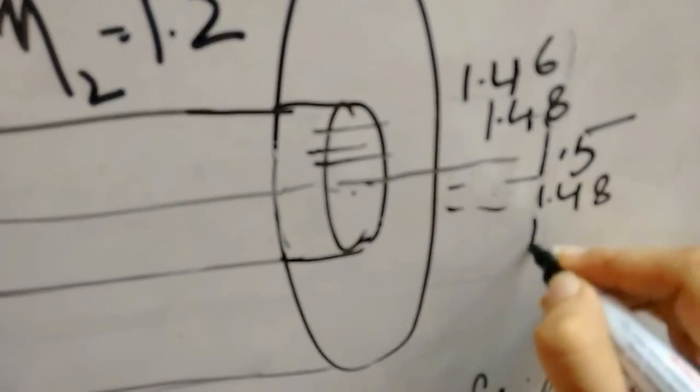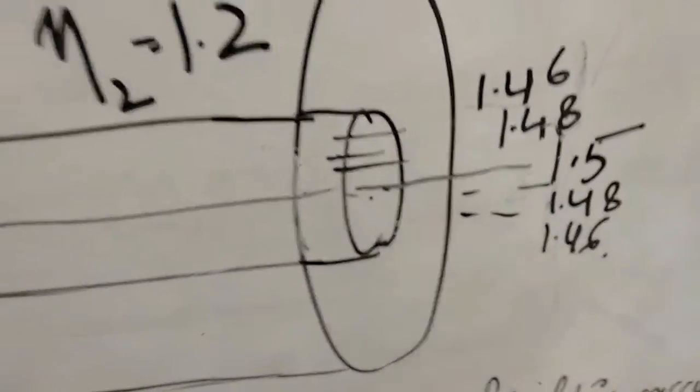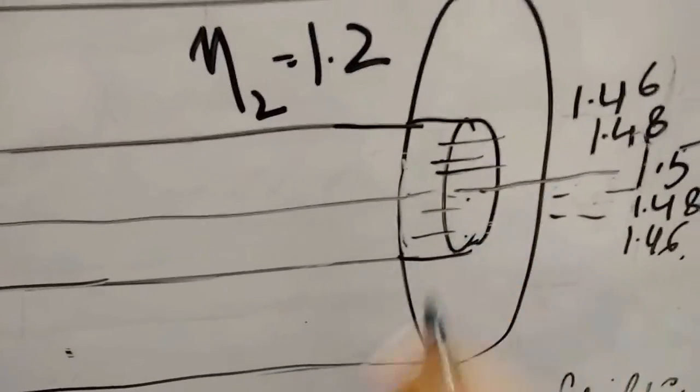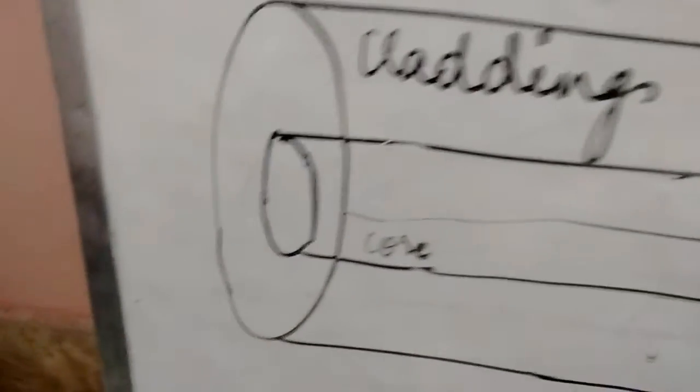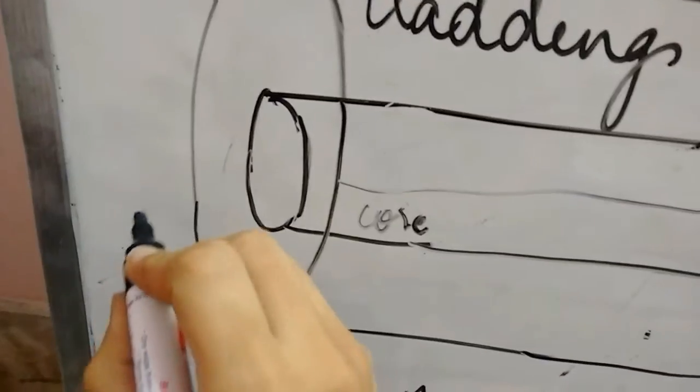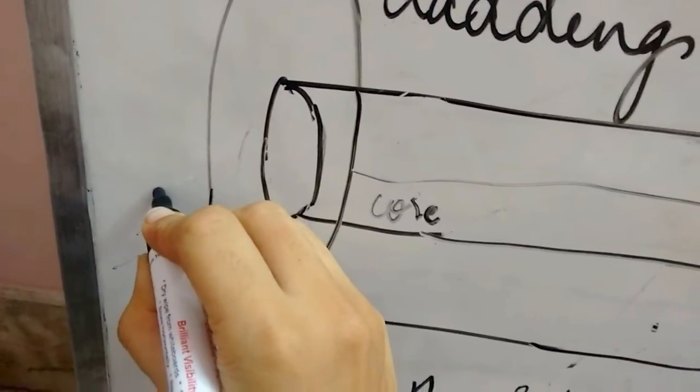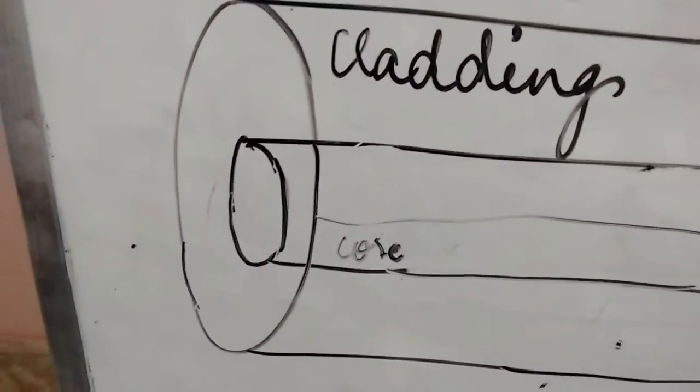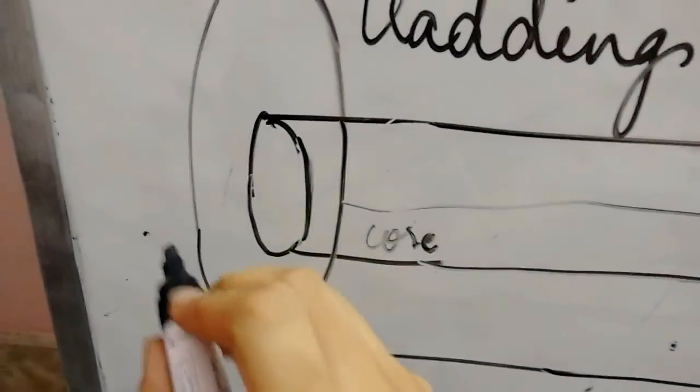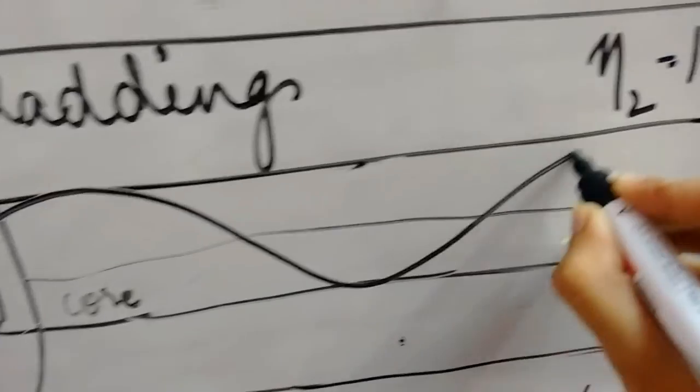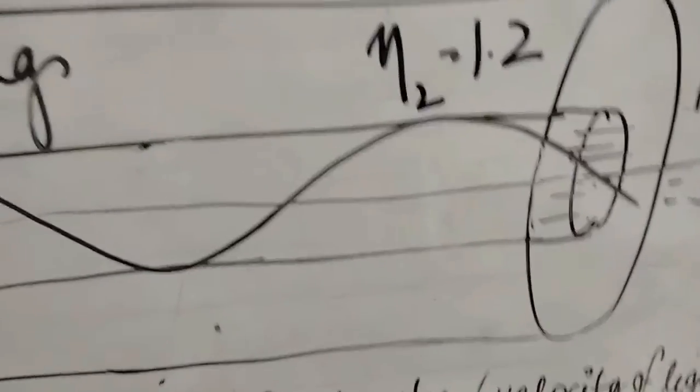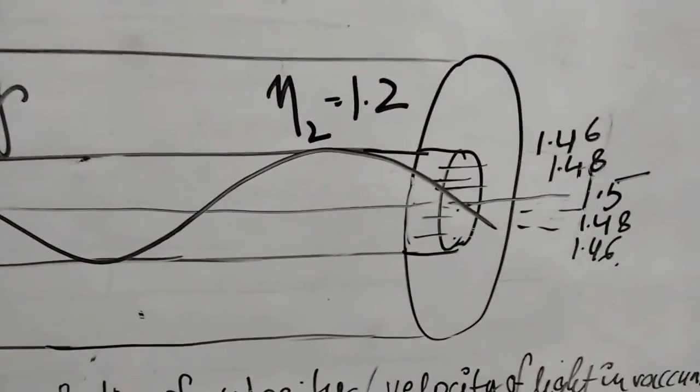So what happens because of the variable refractive index, the wave that is sent through the optical fiber does not have the sharp bends as we have studied in the step index fiber. So it has the gradual bends, like this. Thank you.